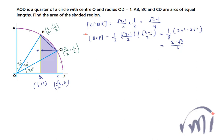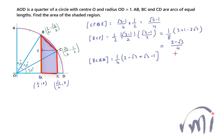Adding the rectangle and triangle areas, the area of quadrilateral BCRQ equals (1/4)[(2 − √3) + (√3 − 1)]. The √3 terms cancel and 2 − 1 = 1, so the combined area is 1/4. Now we need to find the area of circular segment BC.